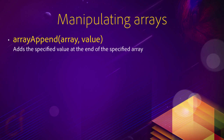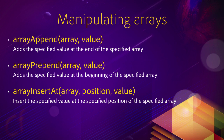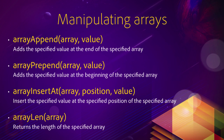If I call ArrayAppend(A_colors, orange), I will end up with a fourth index containing the orange color. ArrayPrepend adds a value at the beginning of the array, so ArrayPrepend(A_colors, orange) gives a four-index array where orange is index one, red is two, green is three, and blue is four. There is also ArrayInsertAt to insert a value at a specified location, and the very practical ArrayLen function to return the number of indexes in an array.